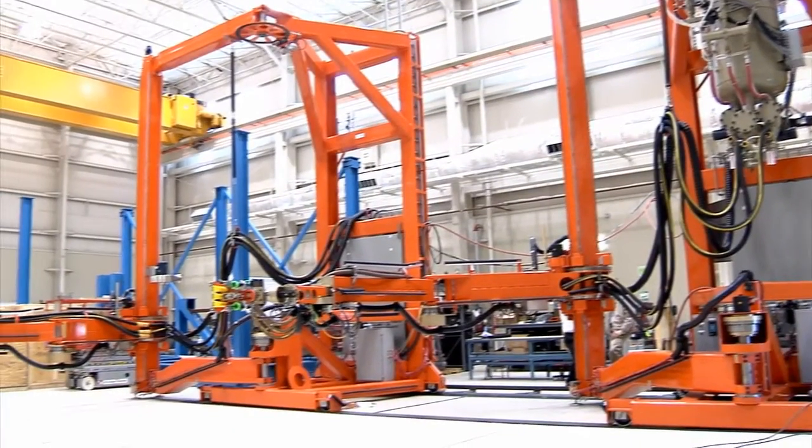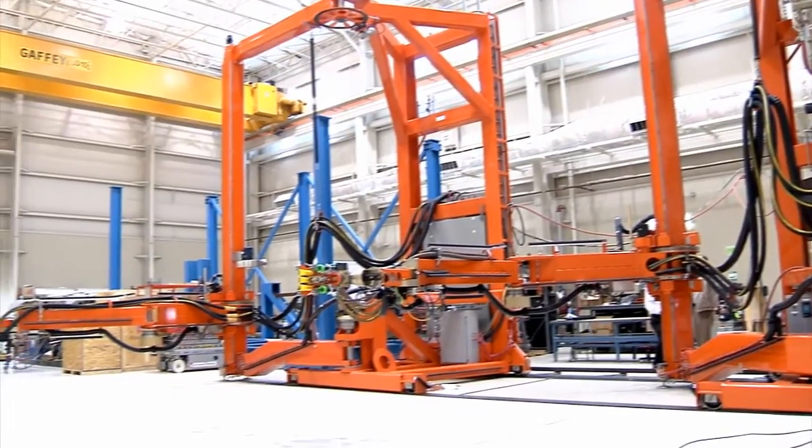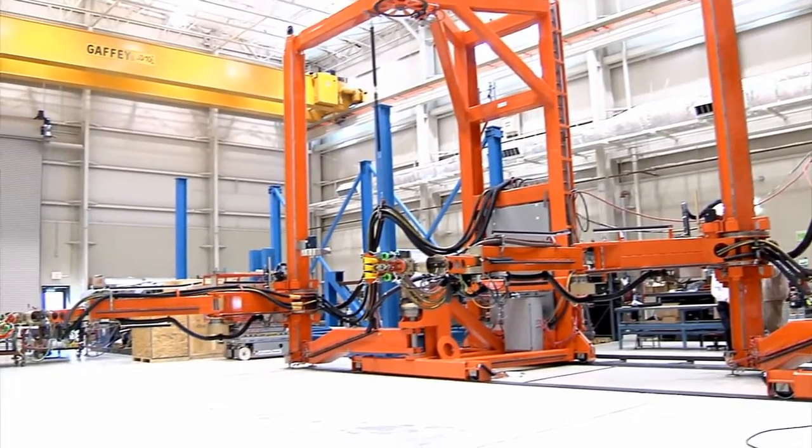This robot has a partner. There's one on either side of the aircraft to be able to strip the entire aircraft. They work in tandem. These robots are some of the largest freestanding robots in the world.